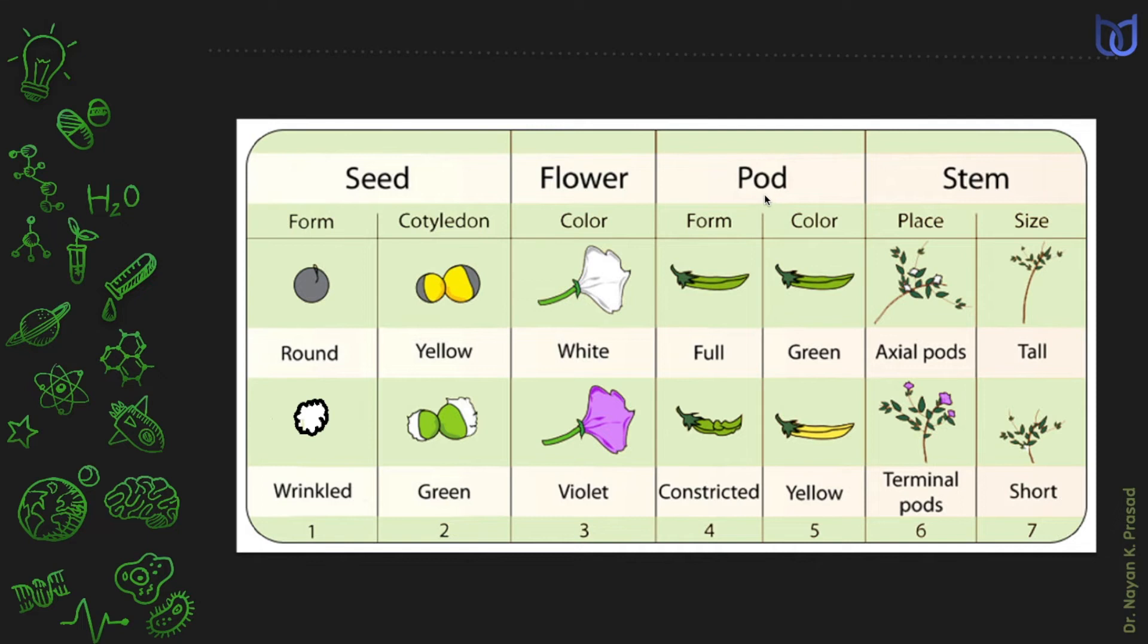Similarly, the nature of the pod may be full or constricted, means inflated or constricted, both the varieties are found. The color of the pod may be green or yellow. The position of the flower and the pod may be axial or terminal. The size of the plant may be tall or may be short.